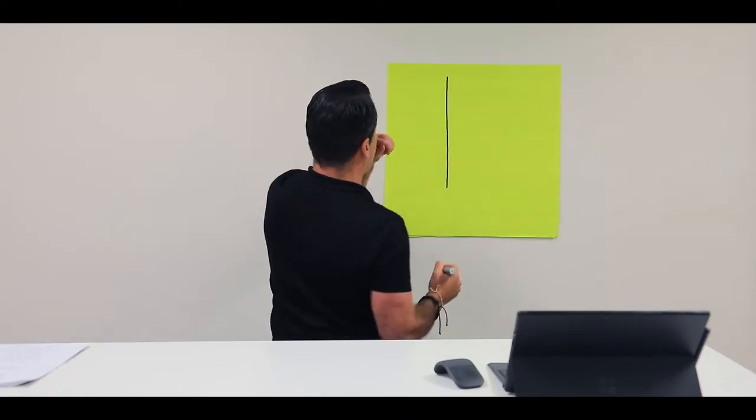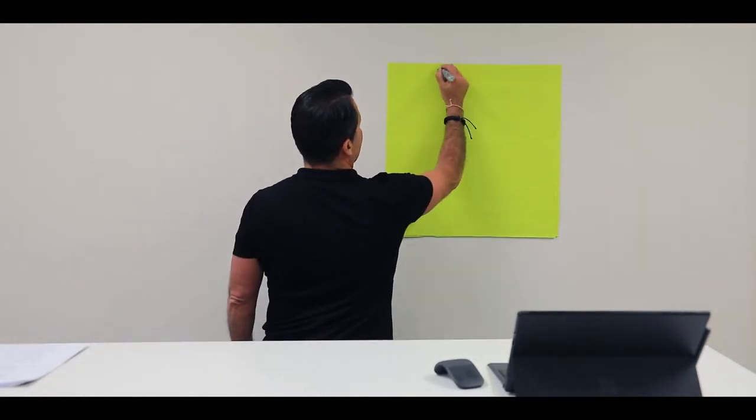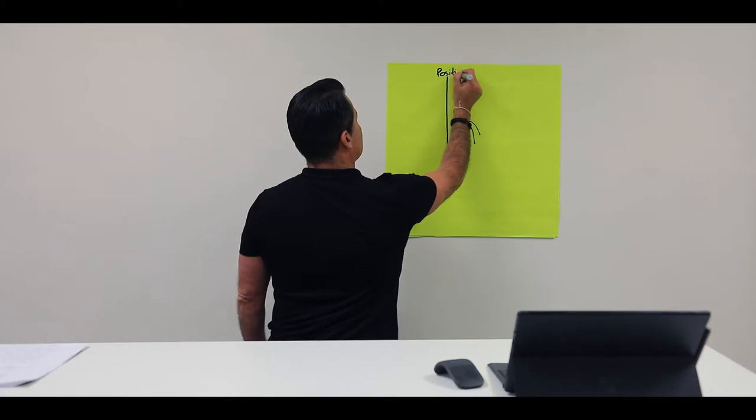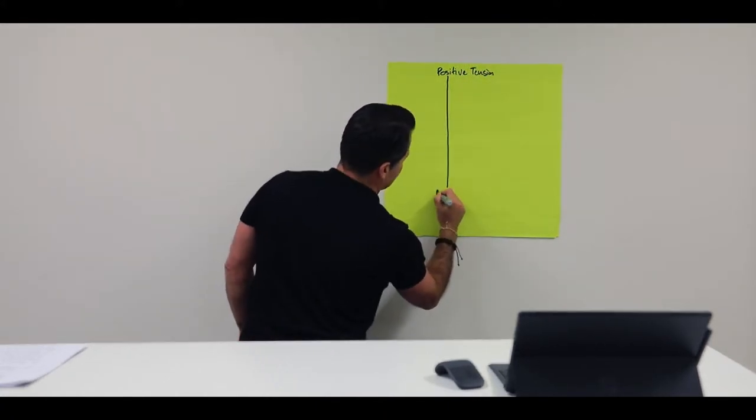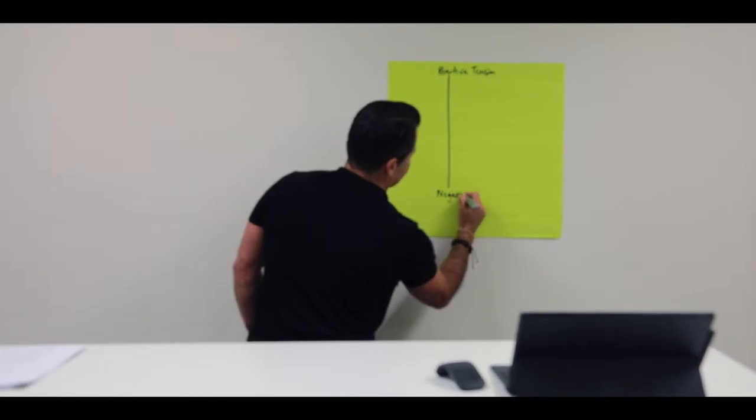Okay, so this is what it looks like. Let me just draw this here. So on the top of the line, you're gonna have what we call positive tension. And then down the bottom here is what we call negative tension.